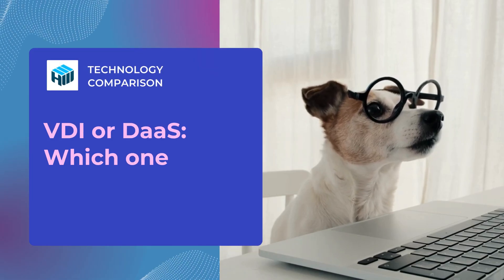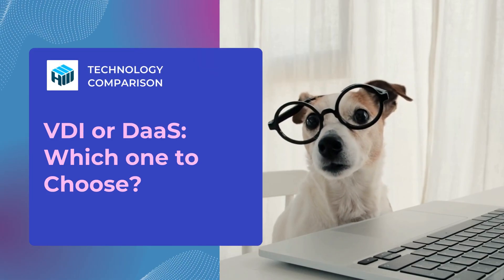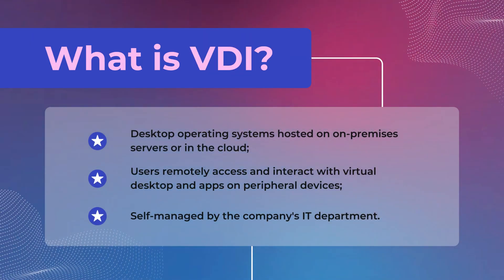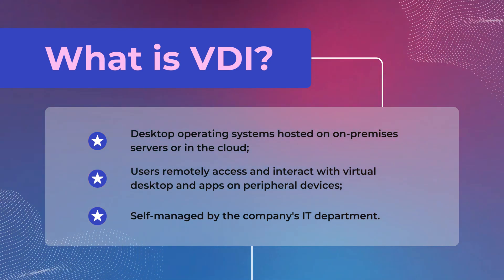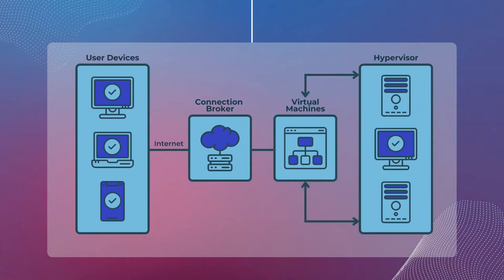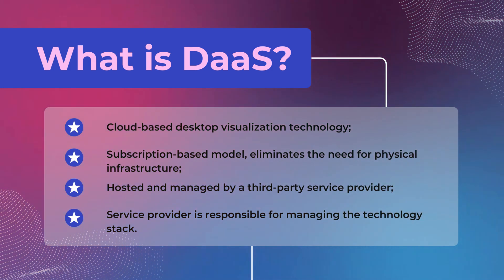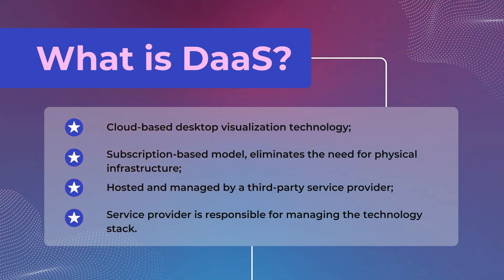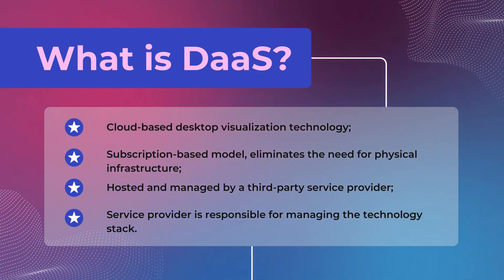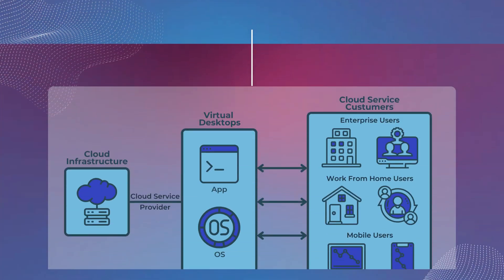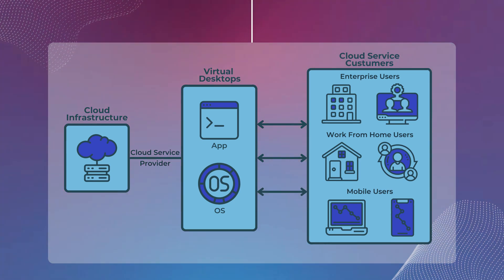On the surface, Virtual Desktop Infrastructure and Desktop as a Service seem incredibly similar. VDI — Virtual Desktop Infrastructure — is the technology that enables the creation of virtual desktops on a remote server setup. You can see the simplified diagram showcasing the VDI architecture. Desktop as a Service is a cloud-based service in which a third-party service provider offers their customers VDI-based virtual desktops over the cloud. This scheme illustrates the DaaS architecture.